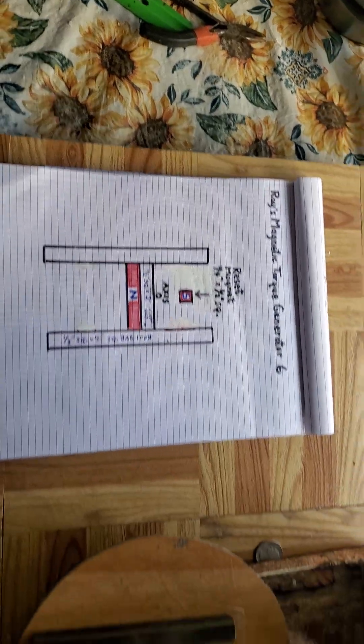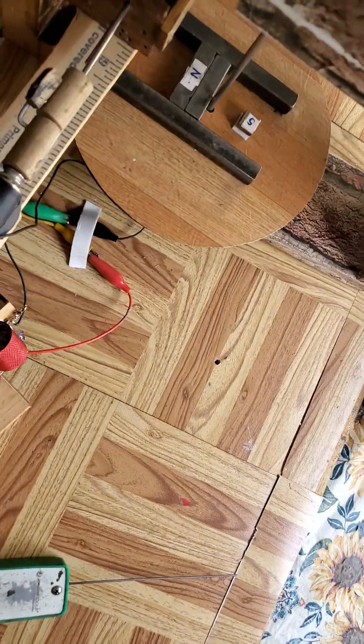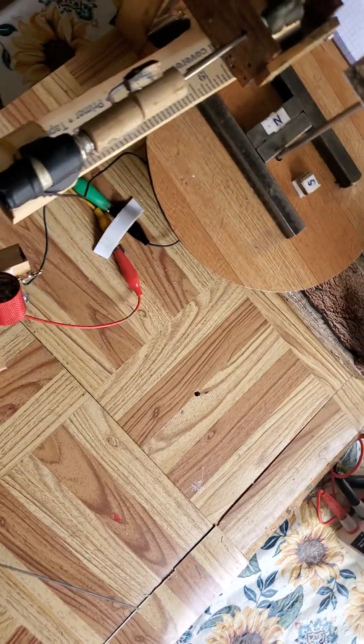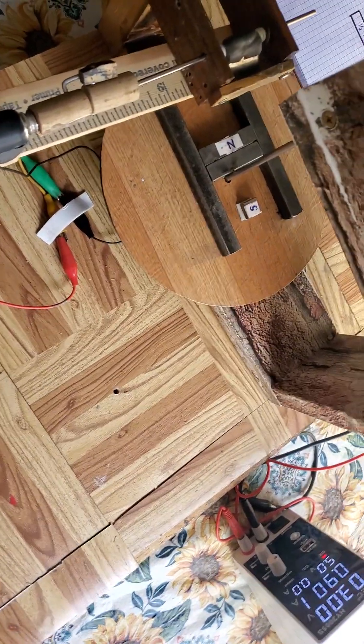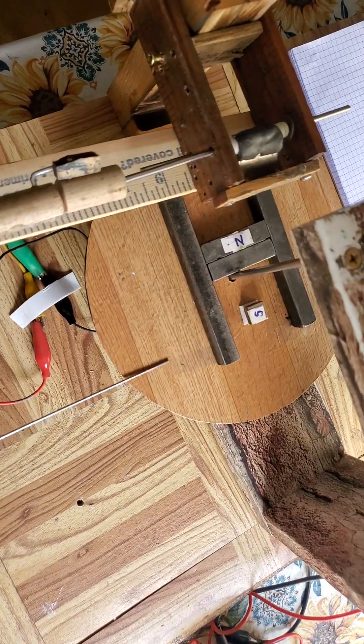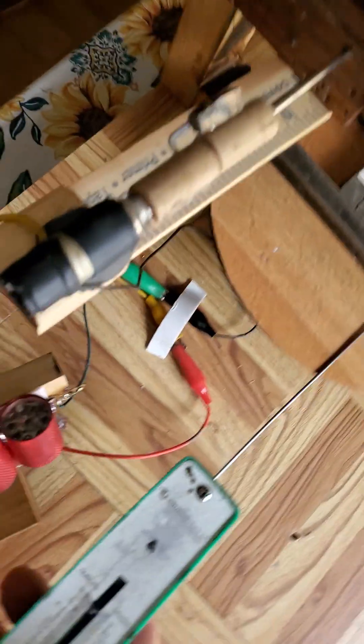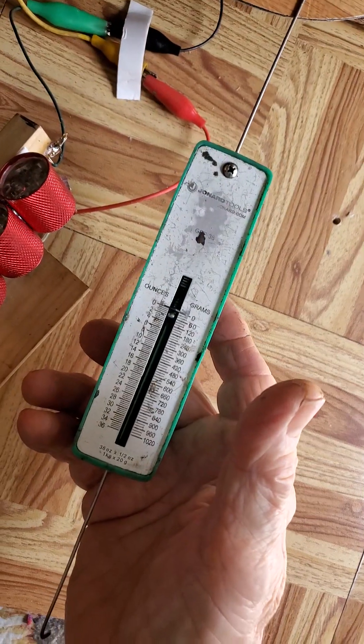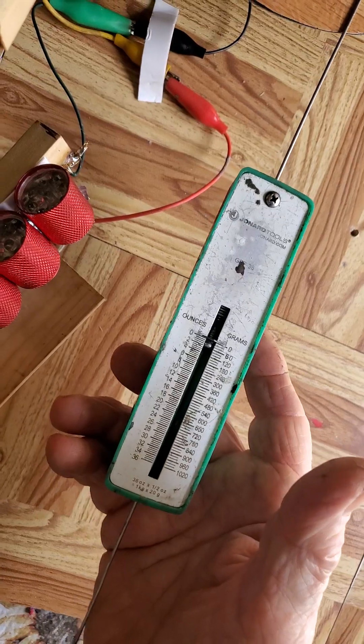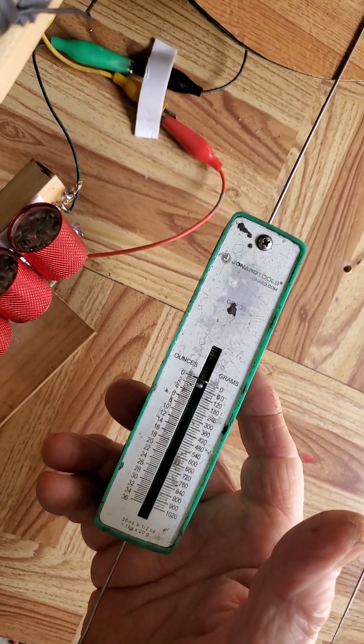So we're going to start out to see what my input would be. Everything for an over-unity effect is input to output ratios. So this is what I call input. Here's my ounce gauge and I'll get her started here.